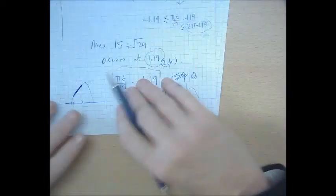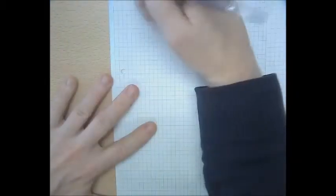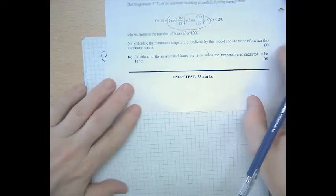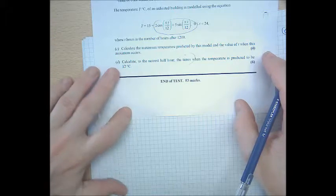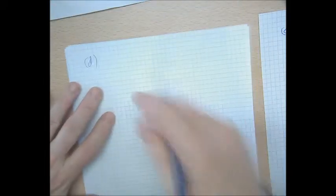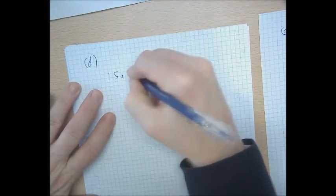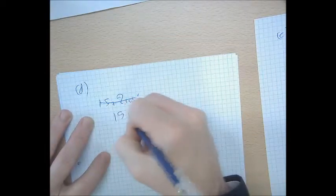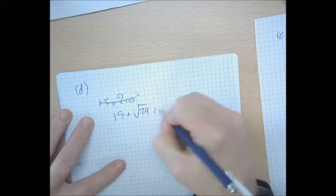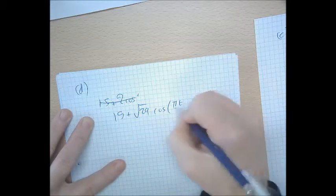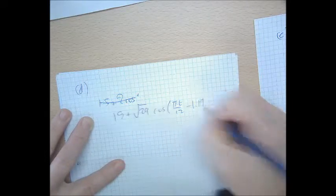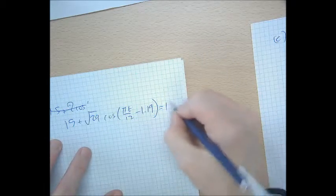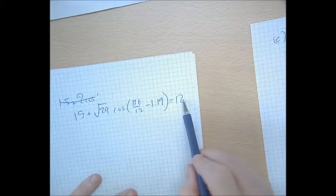Okay, part d. Calculate to the nearest half hour the times when the temperature is predicted to be 12 degrees. We have a model for temperature: 15 plus root 29 cos(πt/12 minus 1.19). That's got to spit out 12. That's the whole point - our model is spitting out a temperature of 12.